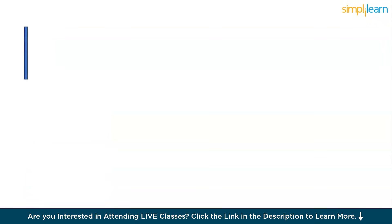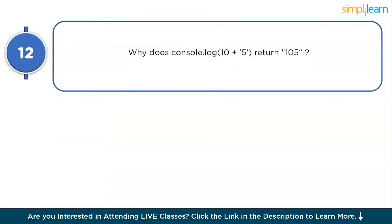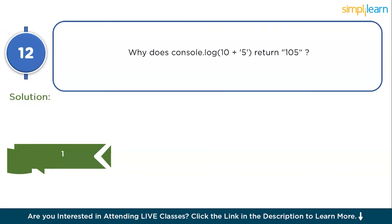Question 12: why does console.log('10' + 5) return 105? The basic solution is that '10' here is treated as a string, so the output becomes '10' + 5 = '105' — the number is concatenated to the string rather than added arithmetically.